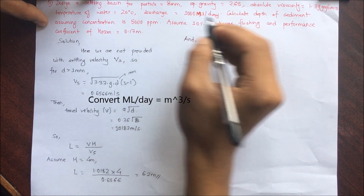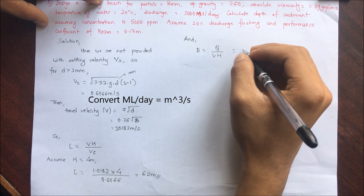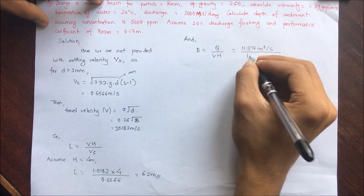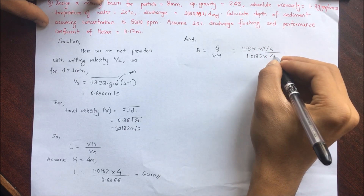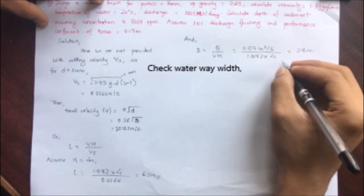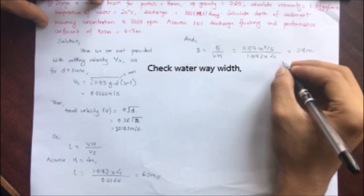Width B = Q / (v × H). Converting Q = 1000 million liters per day to m³/s gives 11.57 m³/s. So B = 11.57 / (1.0182 × 4) = 2.8 m. We also check this against B' = 4.75 × √Q = 16.57 m. Since we take the smaller value, B = 2.8 m is the width of the settling basin.